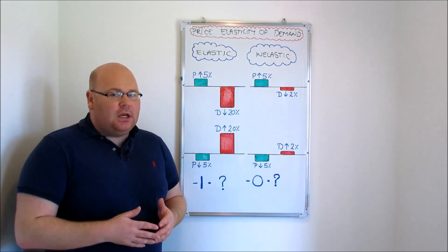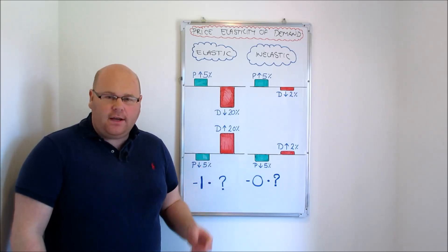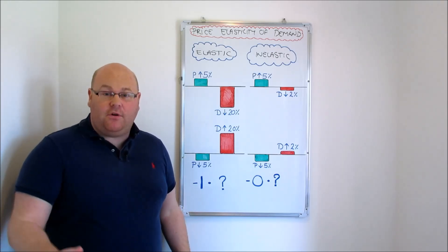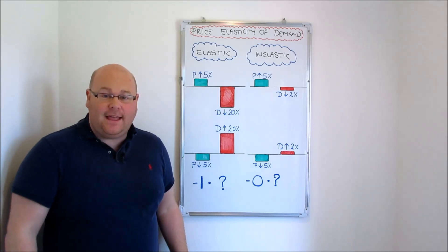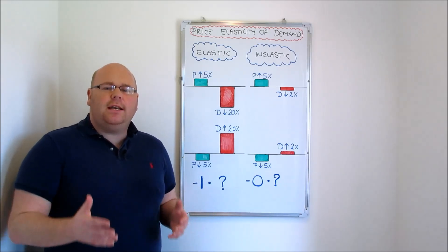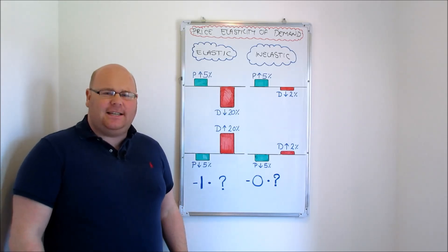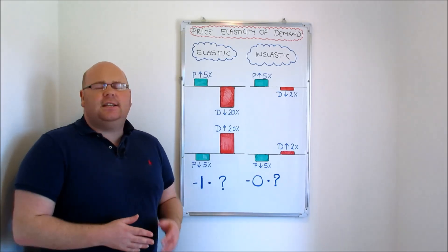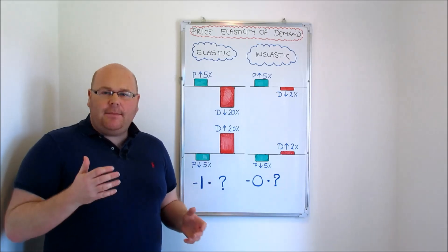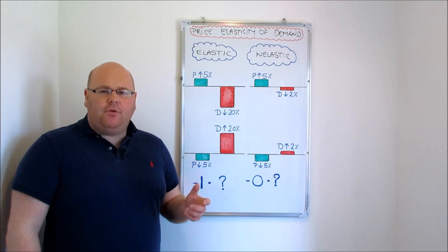This is a concept that's absolutely key to us as students because it allows us to offer advice in business studies exams about what marketing managers might want to think about doing with the prices of different brands in their portfolios. Managers might find that they have two different types of products when it comes to elasticity. Let's imagine we've got a portfolio of products and we're thinking about doing some price increases.